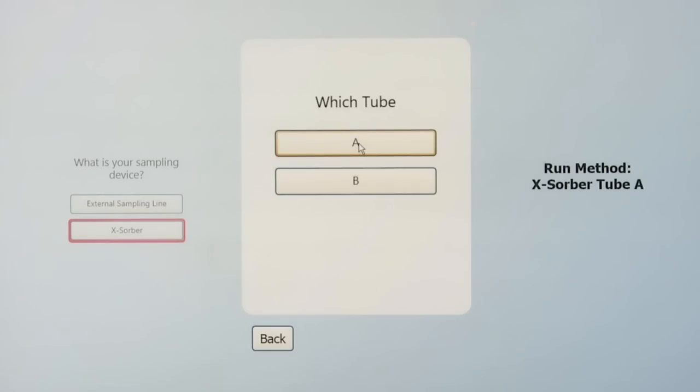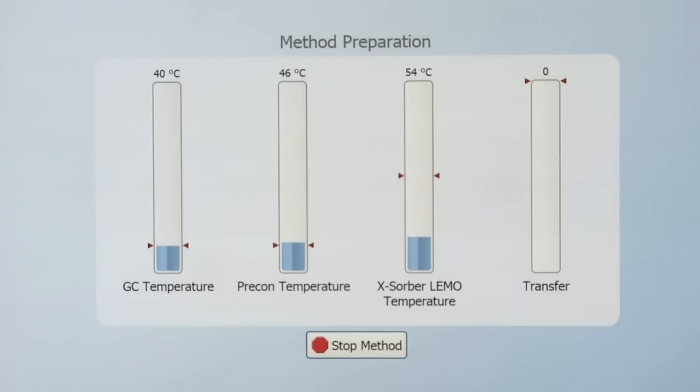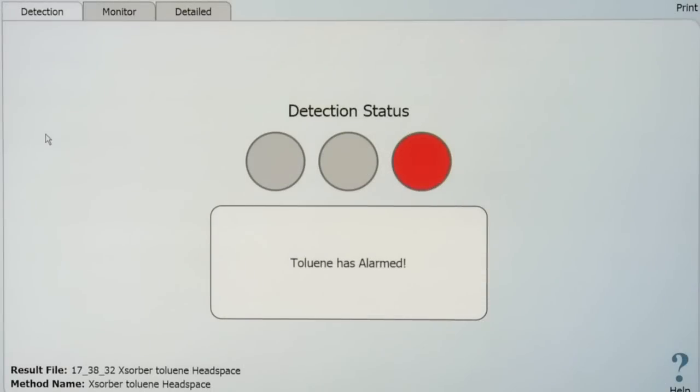Now the system is automatically going to run through a method where it's going to heat and transfer the sample from the Xorber onto the mass spectrometer. It's going to go through the GC separation step and then the mass spec analysis. The method has been in progress.